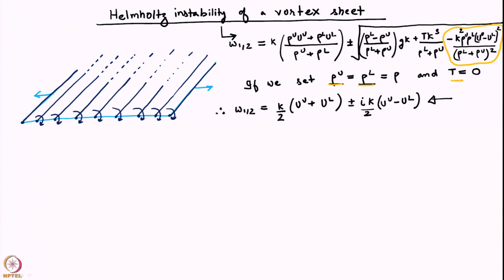We are saying there is only one fluid — a single density and no surface tension — which sets both the first two terms inside the square root to zero. We are left only with the third term, which is negative. Consequently, we find that there is always instability, and the dispersion relation simplifies to that expression.